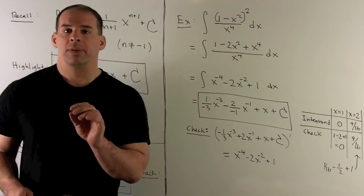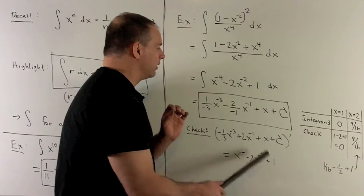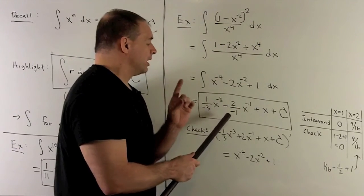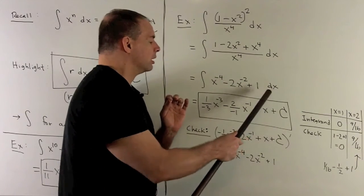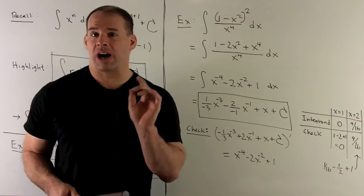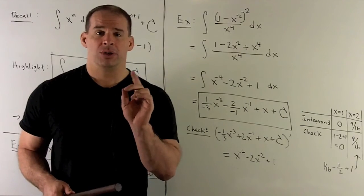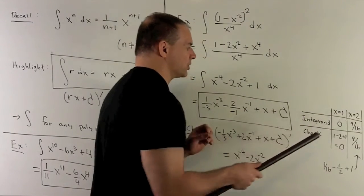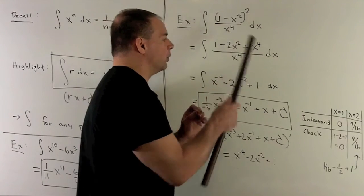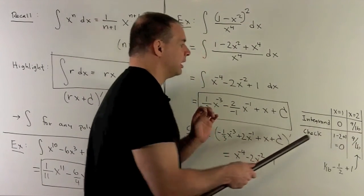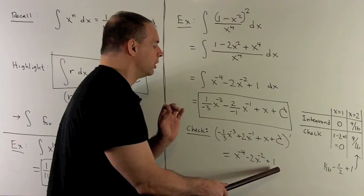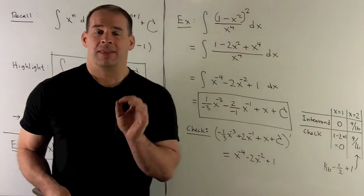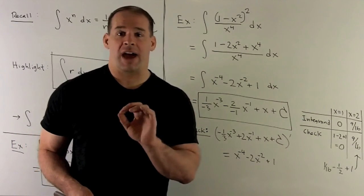Now you check your work — take the derivative. What comes out is this intermediate step, so you really want to check against your original integrand, because mistakes made along the way won't get caught otherwise. Another way to check when expressions are complicated is to check at specific points. For instance, check at x equals 1 and x equals 2. For the integrand, you get 0 and 9 over 16. Plugging 1 and 2 into our final expression gives the same values: 0 and 9 over 16. That's not as rigorous a check, but in an exam situation with limited time, it's better than nothing.